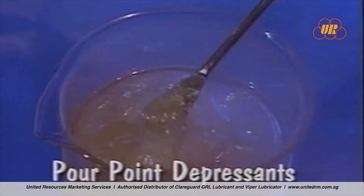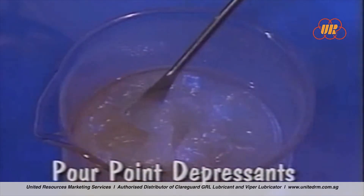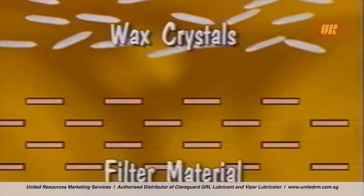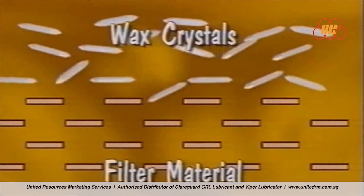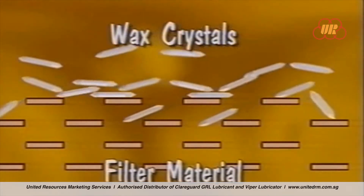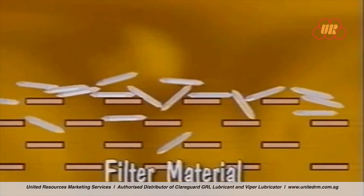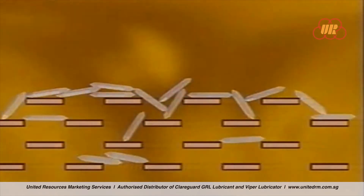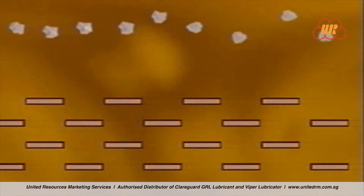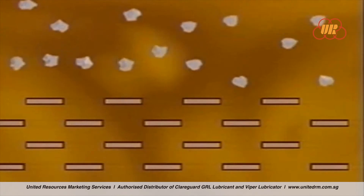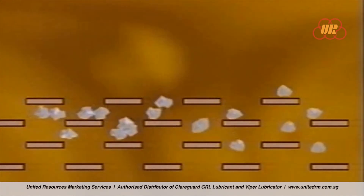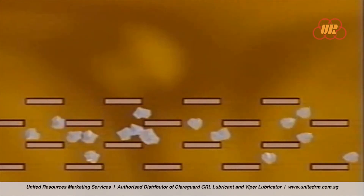Pour point depressants control paraffinic wax crystal formation at low temperatures by interrupting crystal growth, and are especially useful in lubricating oil and fuels. Reducing crystal size and altering their shape maintains proper lubricant viscosity and flow, which is important for sub-zero startup capabilities.